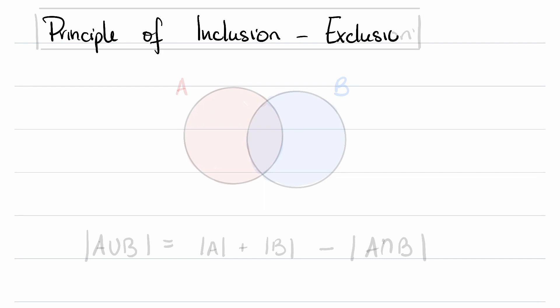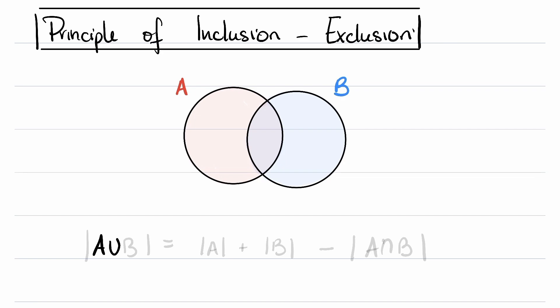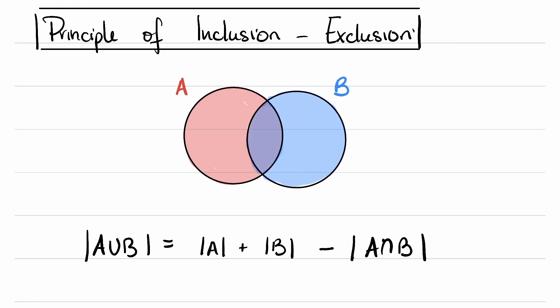Hi class, let's talk about the principle of inclusion-exclusion. Do you remember back when we were talking about the intersection of sets? Say we have two sets, A and B. The cardinality of the union of these sets is going to be the cardinality of the individual sets added, and since the intersection will be counted twice, we have to subtract the cardinality of the intersection. This is our first example of the principle of inclusion-exclusion.